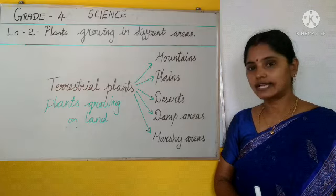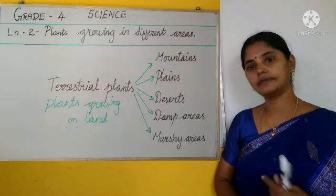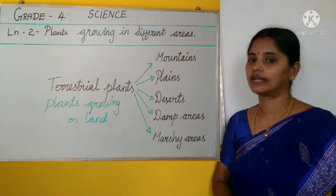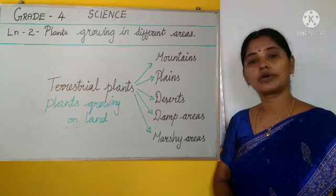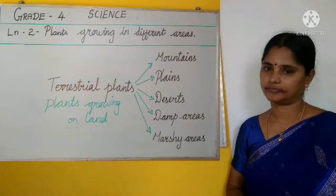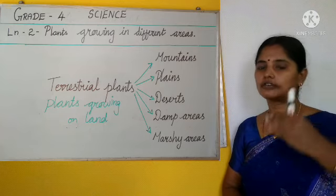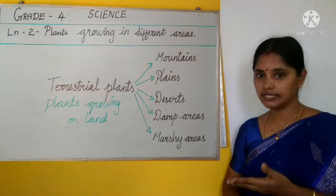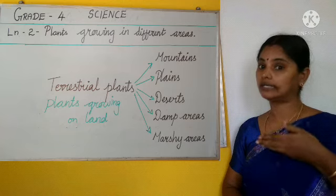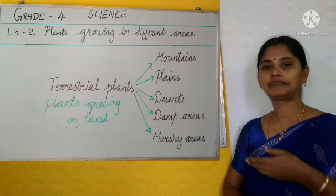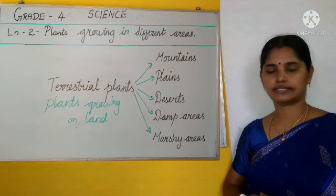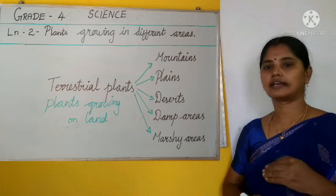About this lesson, terrestrial plants we studied in the previous video. Terrestrial plants means plants growing on land. What are the different forms of land? Mountain, plains, desert, damp and hot areas, swampy and marshy lands. These are all terrestrial land areas.